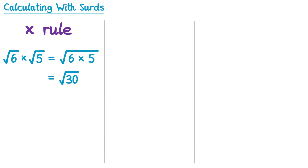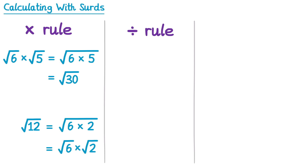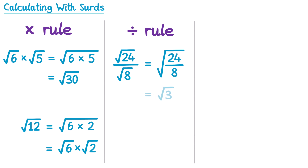You can also apply this rule in reverse, so if we took a surd like the square root of 6 times 2, that's the same as the square root of 6 multiplied by the square root of 2. There's also a division rule, and it works in much the same way. If you take the square root of 24 and divide by the square root of 8, this is the square root of 24 divided by 8. Since 24 divided by 8 is 3, this gives you the square root of 3.